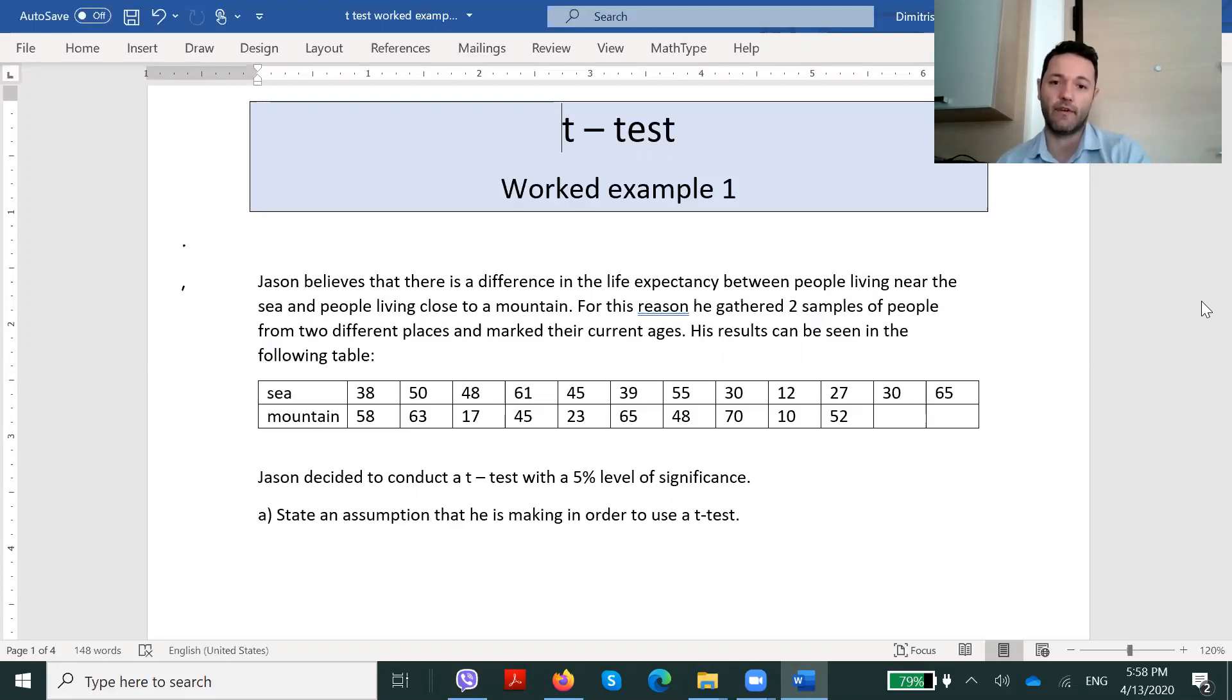And the first note we have to do here is that, as we all remember, in a t-test the two samples don't have to be of the same size. We can see that Jason was able to gather 12 ages from the sample of people living near the sea, but on the other hand, he just gathered 10 people who live close to a mountain. But still, for a t-test, that's perfectly fine. Let's move on.